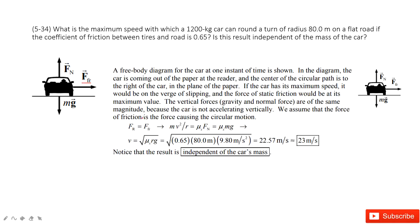We can write these equations. The friction equals the central force. The central force is mass times v-squared divided by r. And the friction is mu_s times normal force. Since normal force equals gravity, we have mu_s times mg. In this way, you can find the velocity equals the square root of mu_s times r times g.